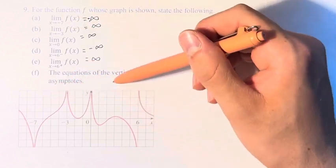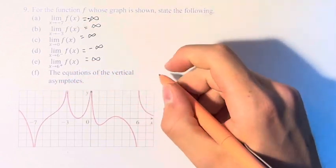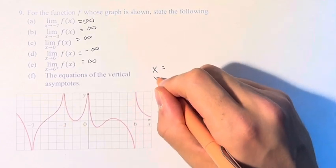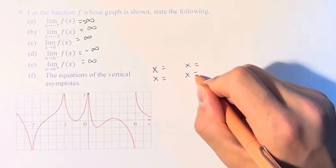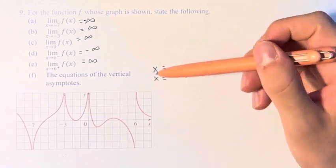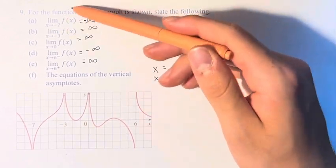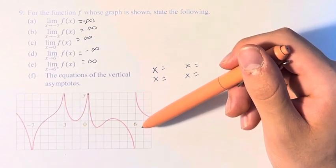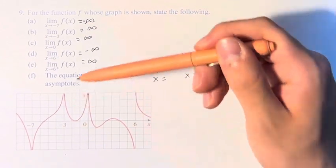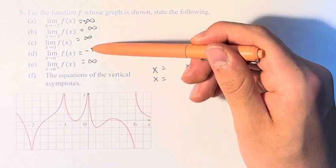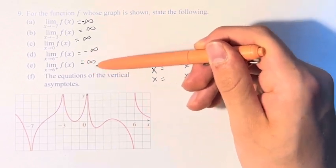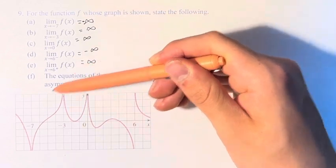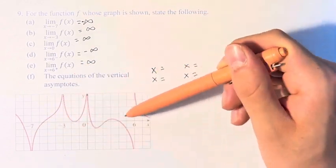And the equations of the vertical asymptotes of this function are lines, vertical lines, so it's x that's equal to some value. And it's values for which the limit of the function exists and it's equal to negative infinity or infinity. Or, the limit of the function does not exist, and in one direction it's going off to negative infinity and one is going off to infinity. And we just found all of our examples right here: negative 7, negative 3, 0, and 6.